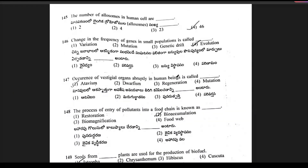Question 145: the number of allosomes in human cells — in human cells there are 2 allosomes. The answer is 2, so option 1 is the right answer.